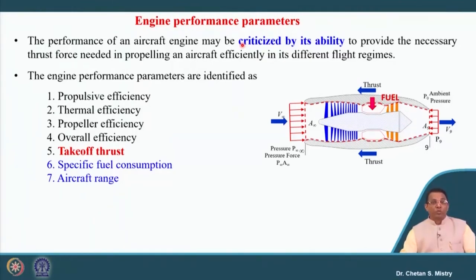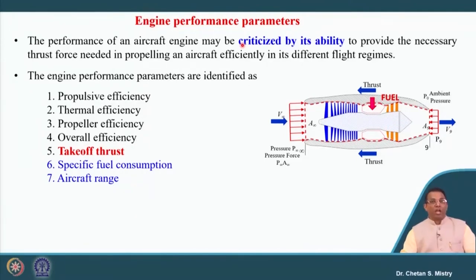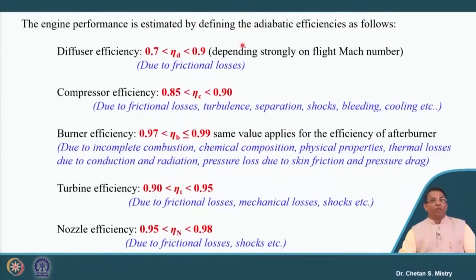We discussed all this in previous lectures. Then we discussed performance parameters and how we evaluate our engine based on its ability to generate thrust — in terms of propulsive efficiency, thermal efficiency, propeller efficiency, overall efficiency, takeoff thrust, specific fuel consumption, and aircraft range. Now, when discussing engine operation, all these parameters need to be configured and observed during the operation phase. Let us look at the important components: intake or diffuser, compressor, combustion chamber, turbine, and nozzle.